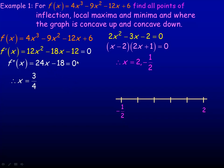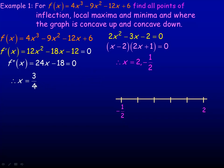Solving for x: bring 18 over and we have 24x equals 18. Dividing both sides by 24, since 6 goes into 18 three times and 6 goes into 24 four times, that gives x equals three quarters. So where x equals three quarters, the second derivative is zero and we may have an inflection point — a possible POI (point of inflection). Three quarters is right between one half and one on the number line.